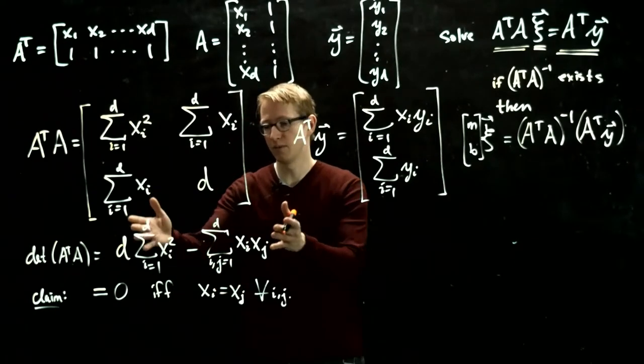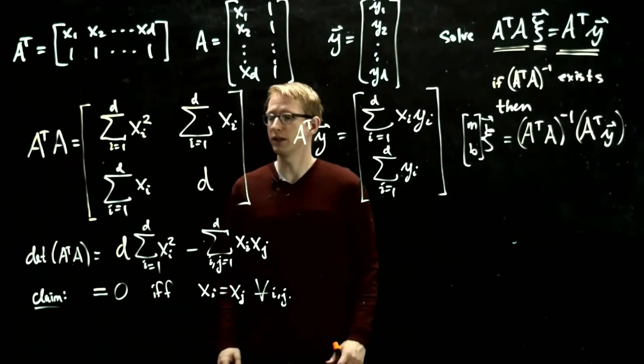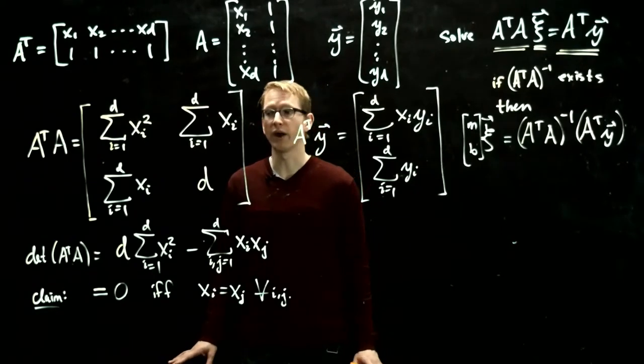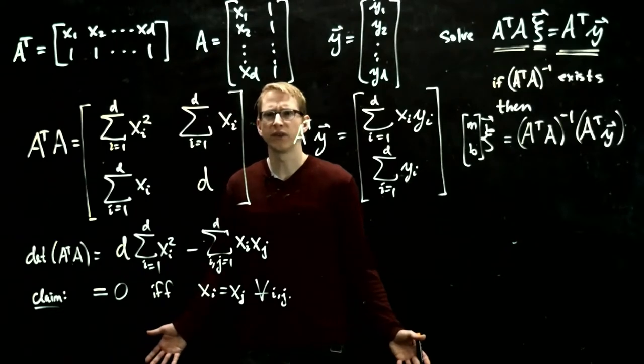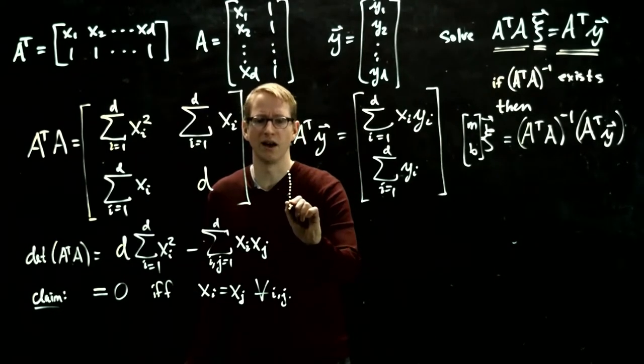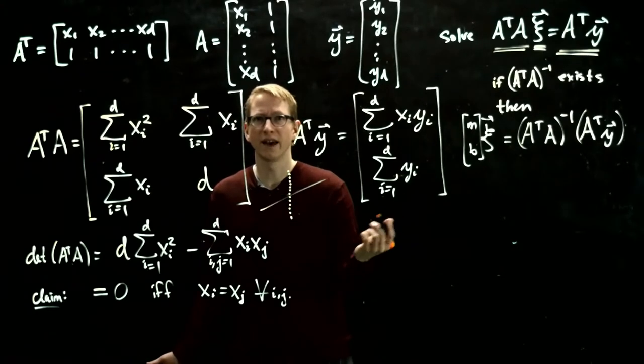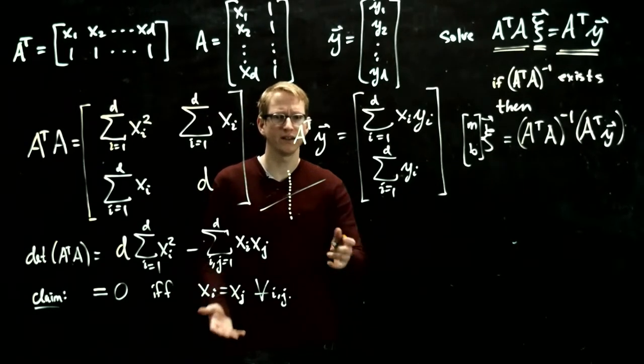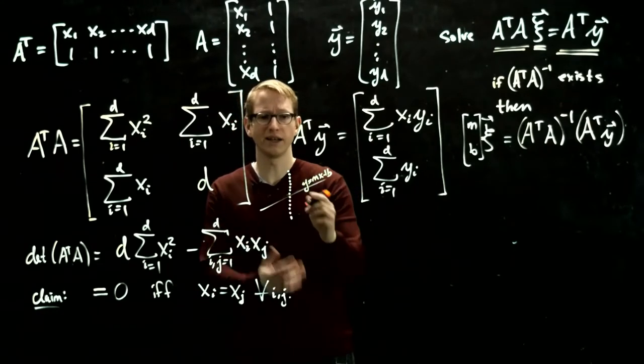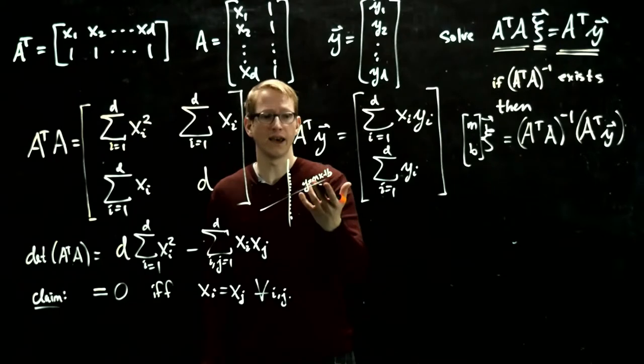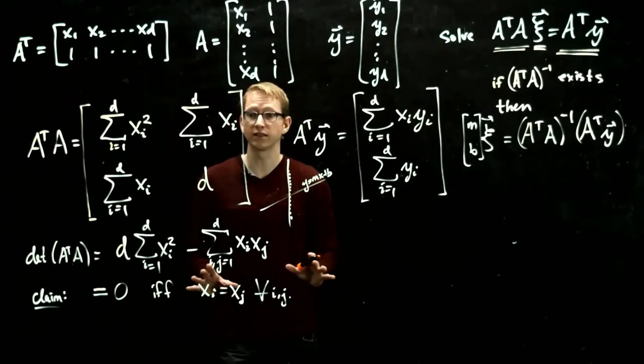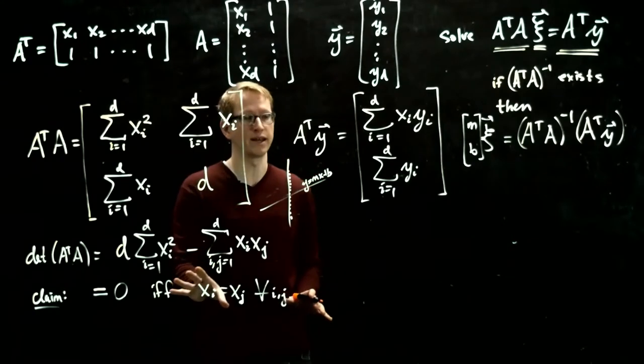Now it takes a little bit of time to actually show that, but you can do it. And this is the only instance when this matrix is not invertible. And if you're thinking about data, this basically would mean that all of your data points lie along a vertical line, and then it makes sense that you can't find a function of the form y equals mx plus b to fit this, because the only line that'll work is a vertical line. And in that case, the slope is infinite, so you won't find a solution. So it makes a lot of sense why this is the only case where that happens.